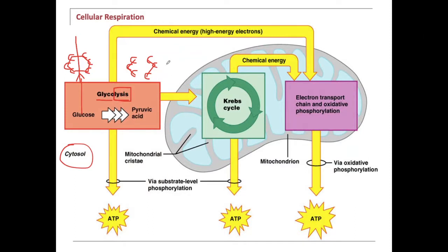If oxygen is available, this pyruvic acid enters the mitochondria. Some ATP is produced by this — not a lot, but some. Then in the mitochondria it goes through the Krebs cycle. The Krebs cycle is where your B vitamins come in, especially B1, B2, and B3. I tell my patients: B1, B2, B3 for energy.